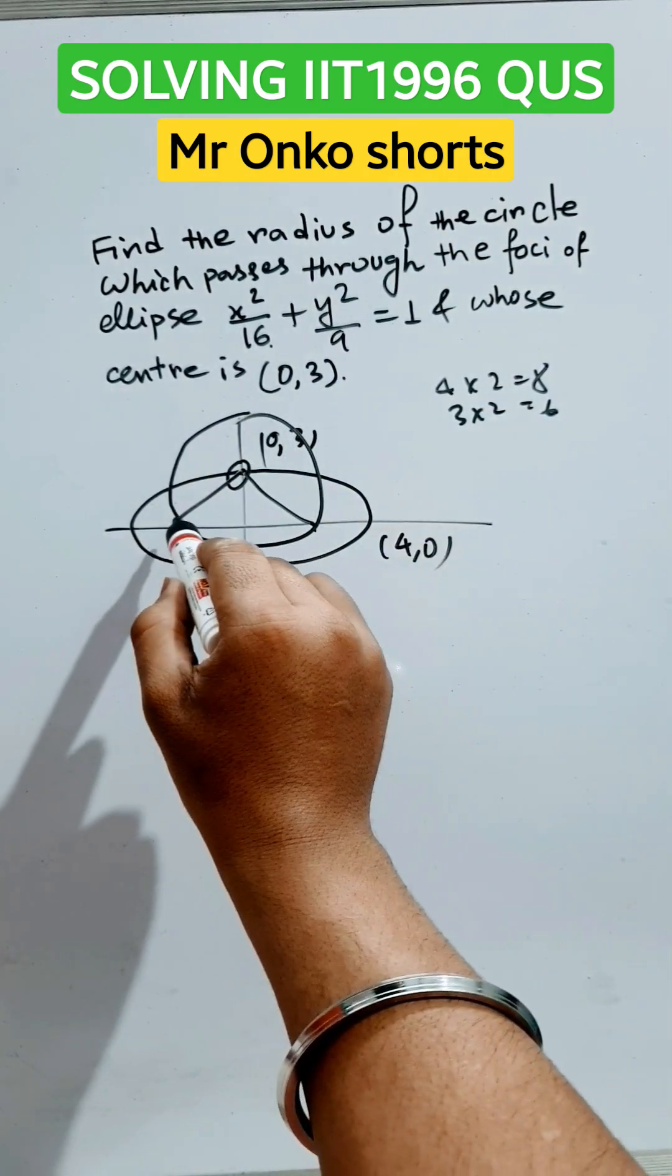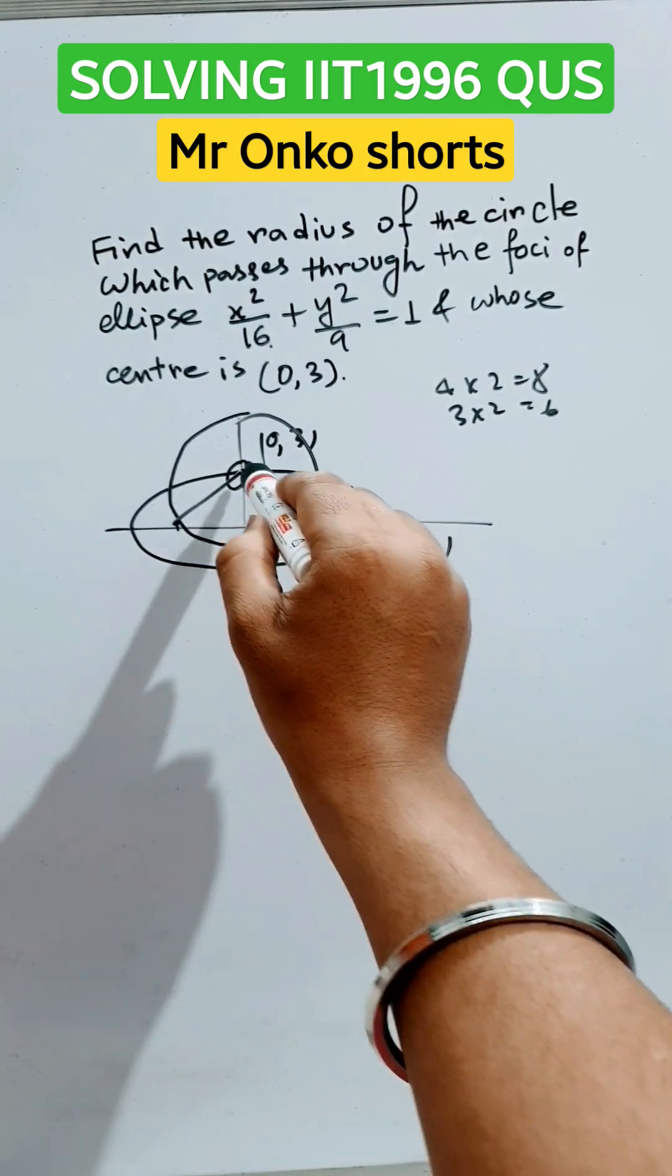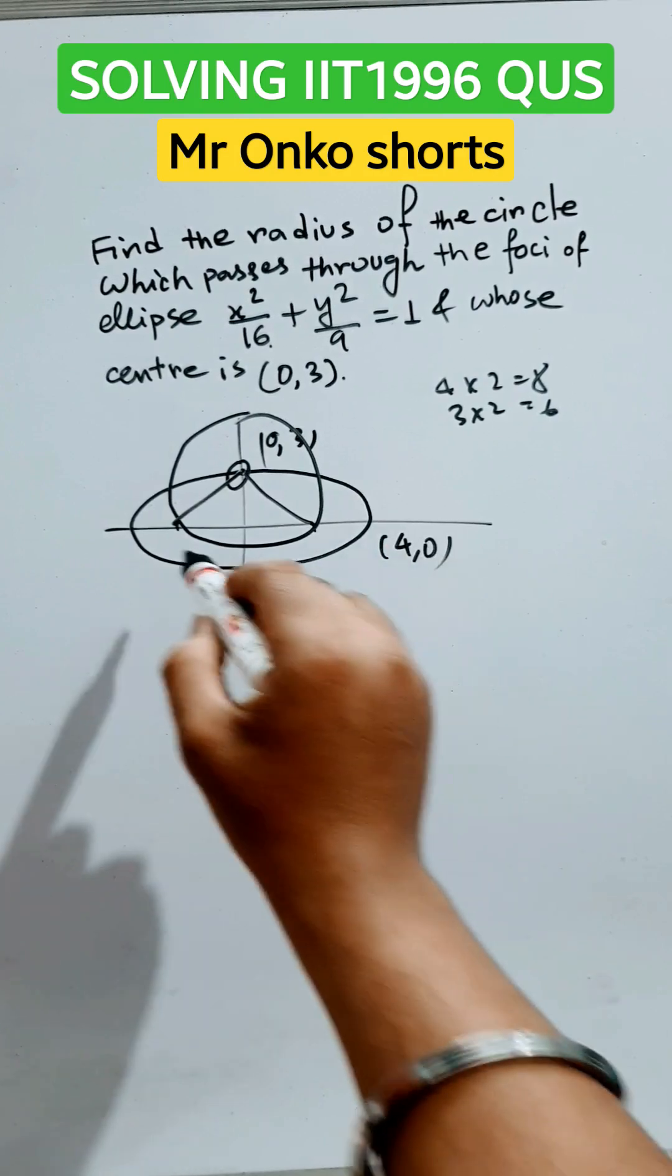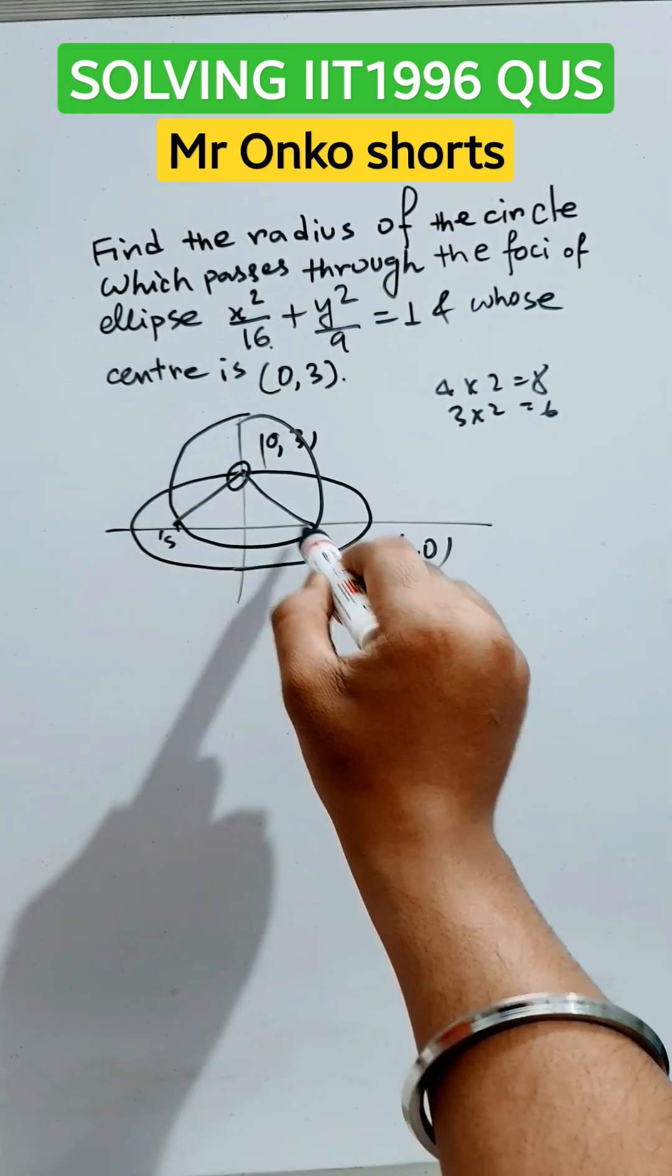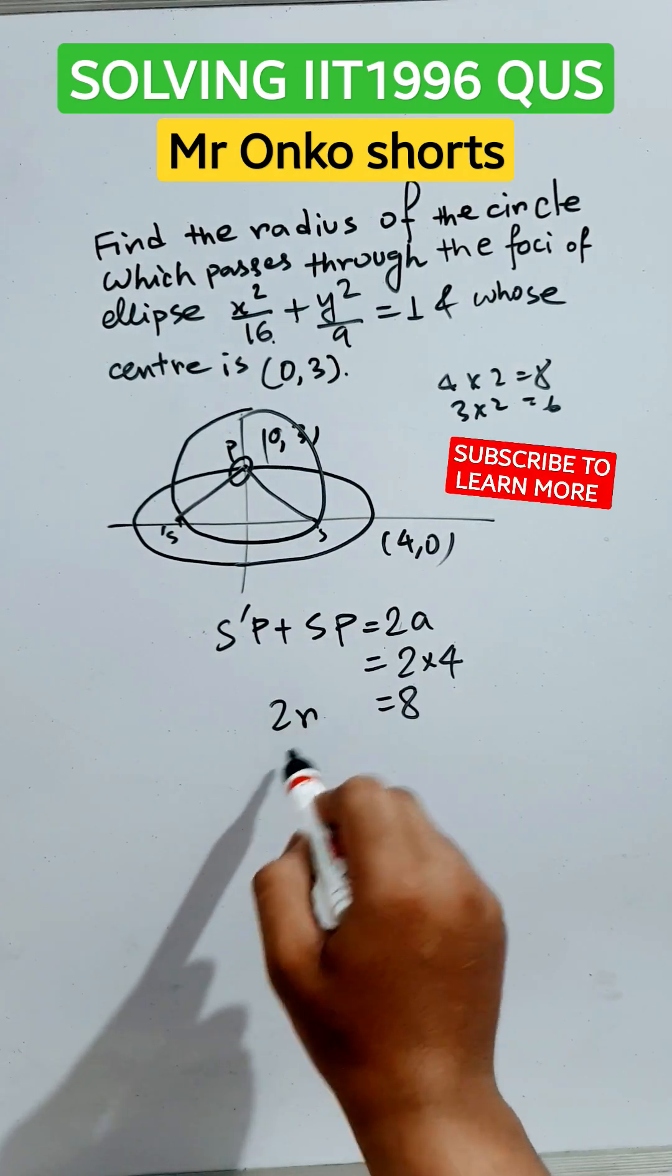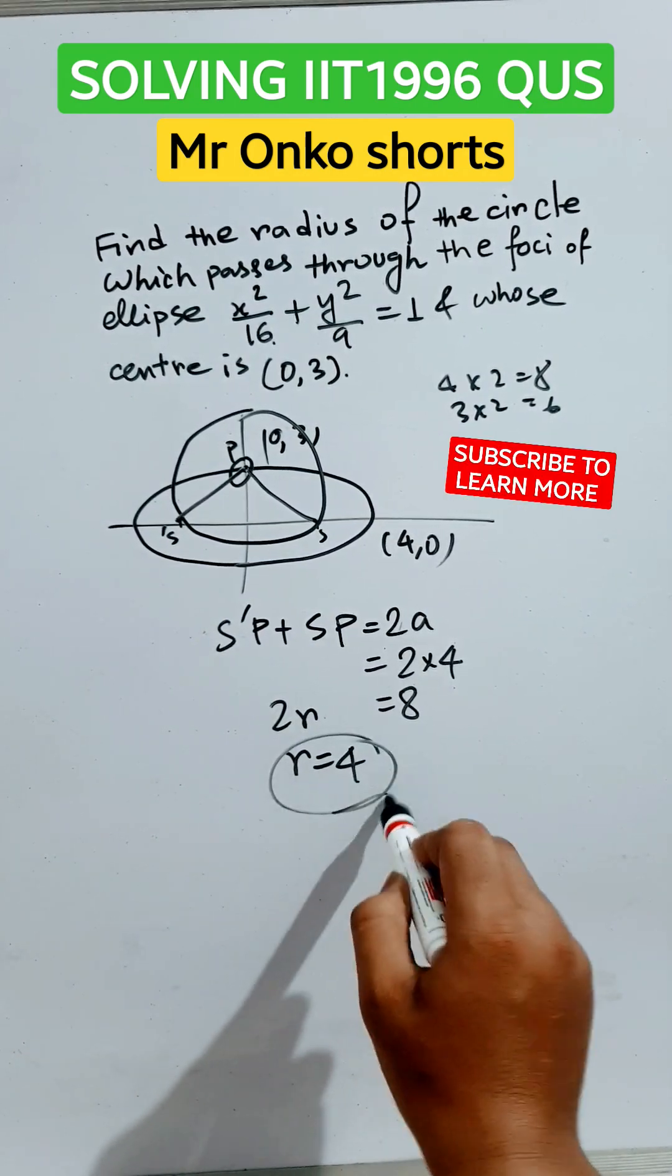We know that the joining line of the two foci with any point on the ellipse equals 2a, that is S' here, S here, and this random point, and this will be 8. Now these two are radii. So 2r equals 8, r equals 4. This is the radius of the circle. Thank you.